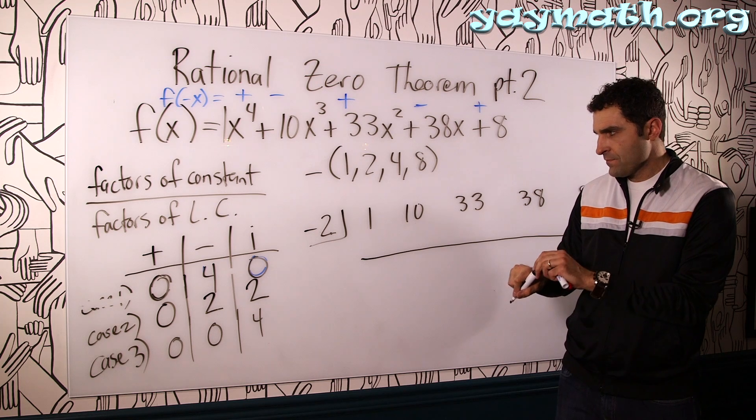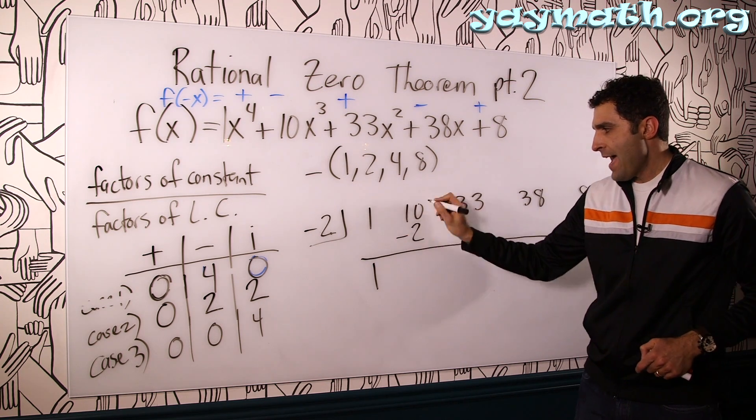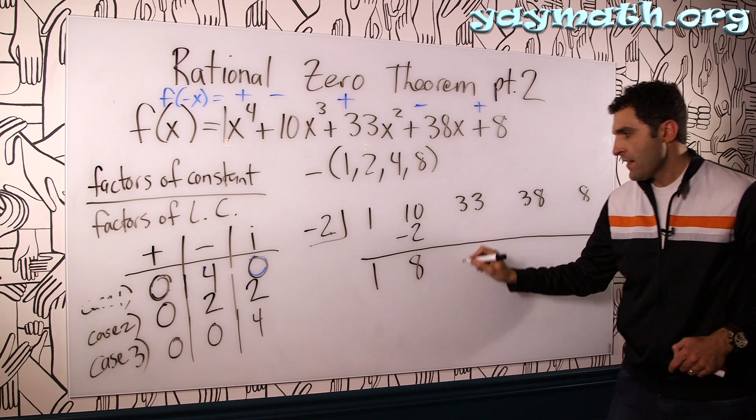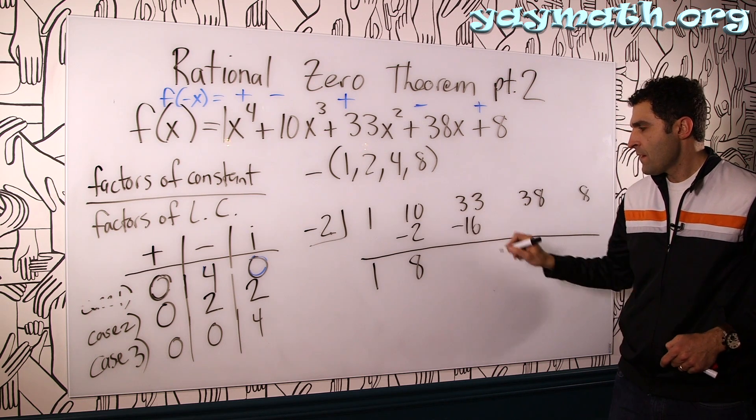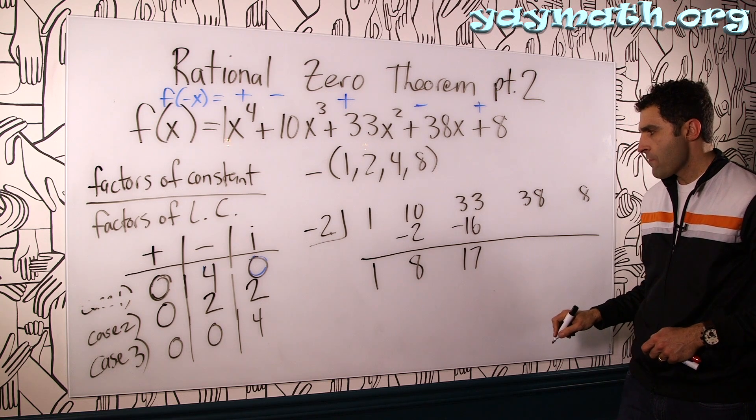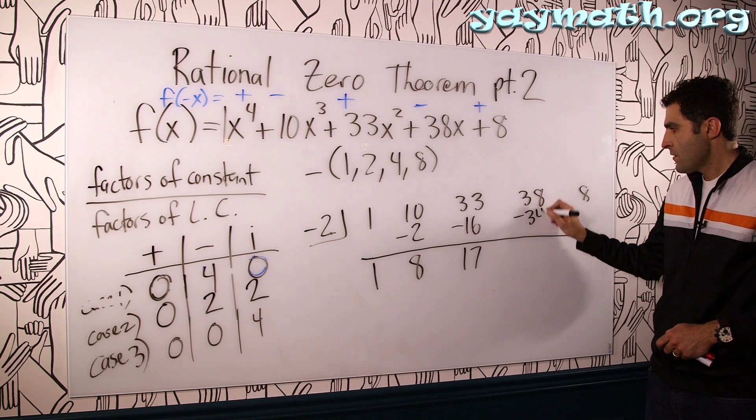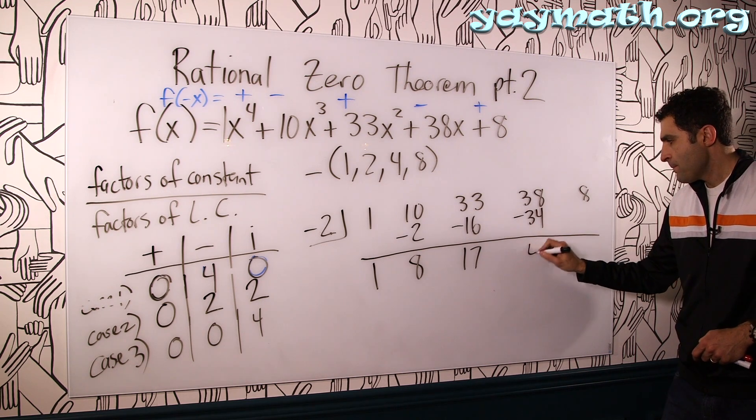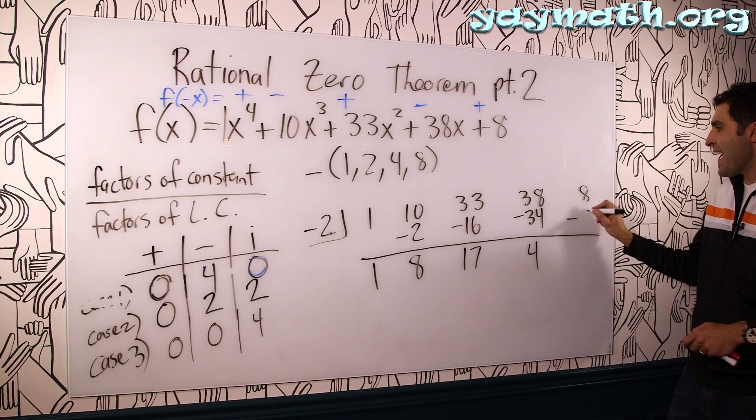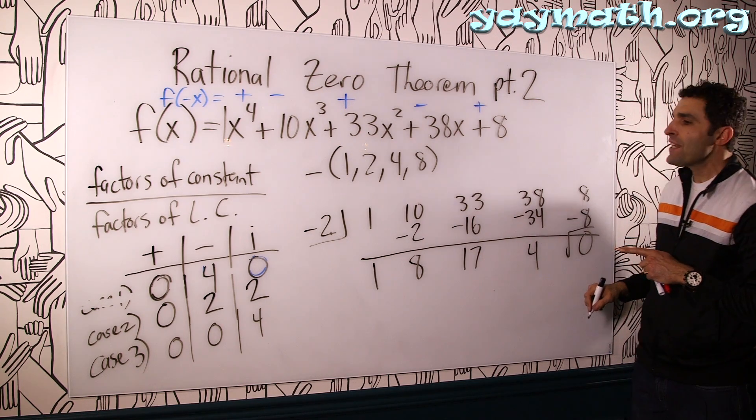Negative two. Going in. Drop it. Negative two. Add. Negative 16. What's this? 17? Should be. Yep. Negative 34. Add 4. Multiply. Boom. We got it. Nice. Nice. One down. Three to go.